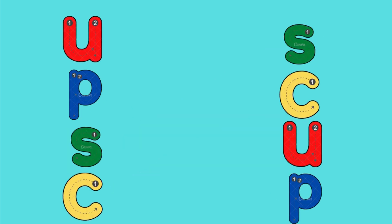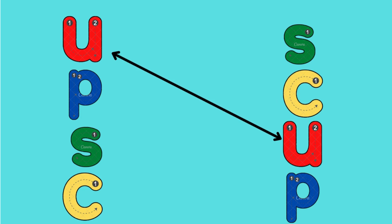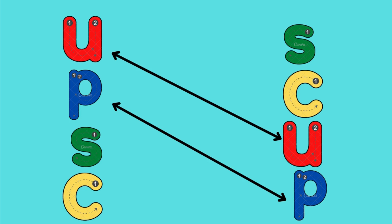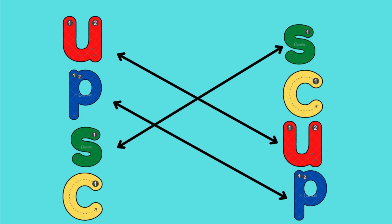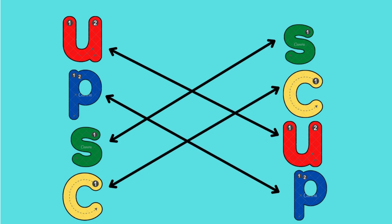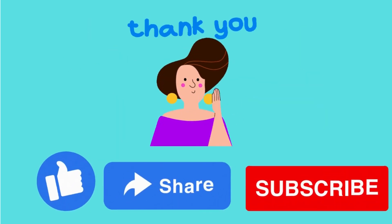Now, u — where is the small u? Right. Where is the small p? Yes. Where is the small s? Yes. And where is the small c? Perfect. You know all the small letter alphabets.